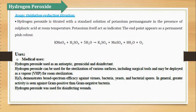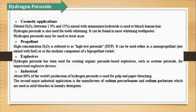Wounds ko disinfect karne ke liye bhi hydrogen peroxide ko use karte hain — jab chot lag jaati hai, wahan pe zakhm ho jaata hai, uski disinfection ke liye. Other uses of hydrogen peroxide include cosmetic applications: isko ammonium hydroxide ke saath mix karke as bleach use karte hain for human hair. Isko use karte hain for tooth whitening ke liye, daanton ko safed karne ke liye, toothpaste mein bhi use kiya jaata hai. Treatment of acne mein bhi — pimples jab ho jaate hain uske liye bhi use kiya jaata hai. As propellant, rocket mein use kiya jaata hai bio-propellant ki tarah se.